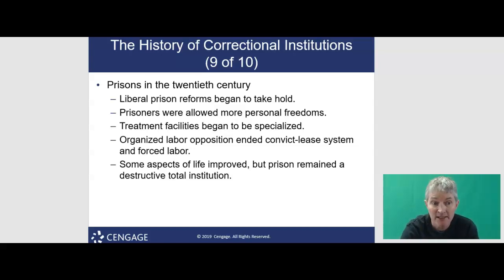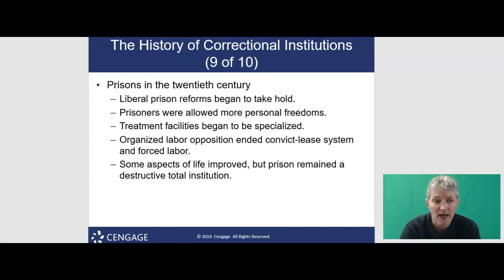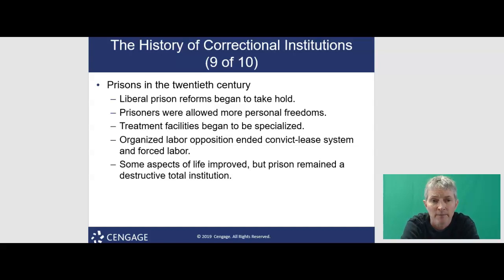Prison administrators began to segregate prisoners by risk and by individual treatment needs, so you didn't have somebody that was in for petty theft hanging out with mass murderers. The opposition by organized labor ultimately ended convict lease systems as well as forced labor. Restrictions continued to be imposed on prison industries, and by 1900, a number of states had restricted the sale of prisoner-made goods on the open market.